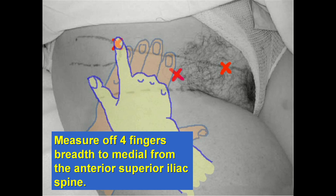Mark the anterior superior iliac spine, the pubic tubercle, and the inguinal ligament between them. Next, place one finger of a hand firmly onto the supramedial aspect of the anterior superior iliac spine. Then place four fingers of the other hand medial to that finger and mark a skin point medial and adjacent to the four fingers. That point should be two centimeters distal to the inguinal ligament.